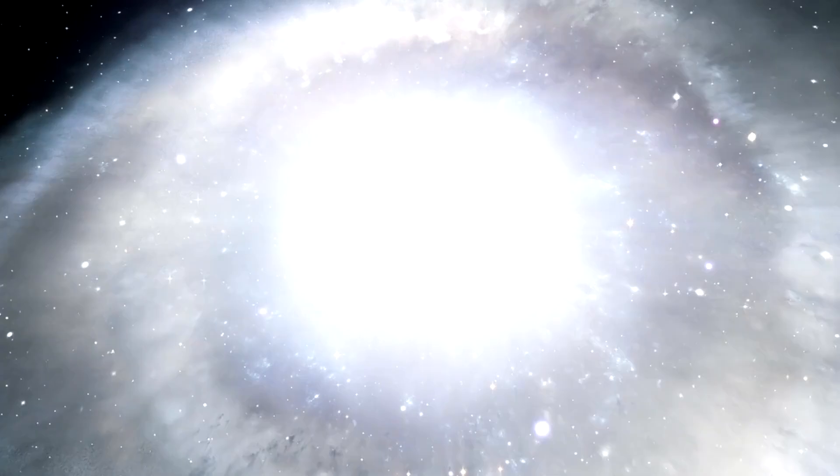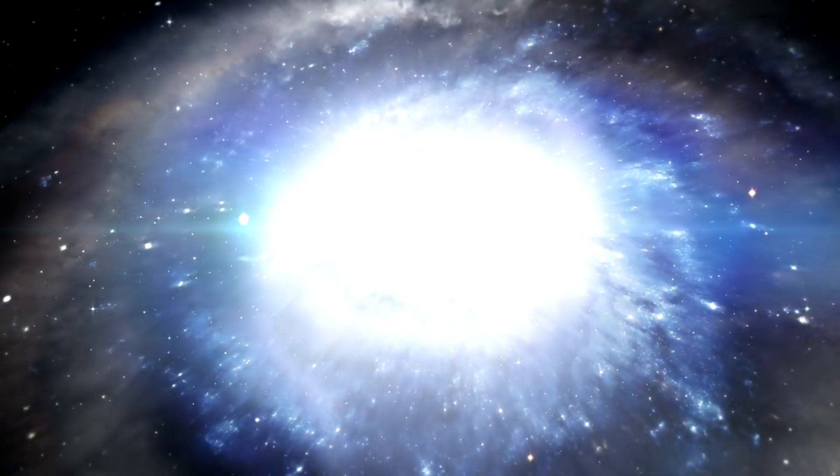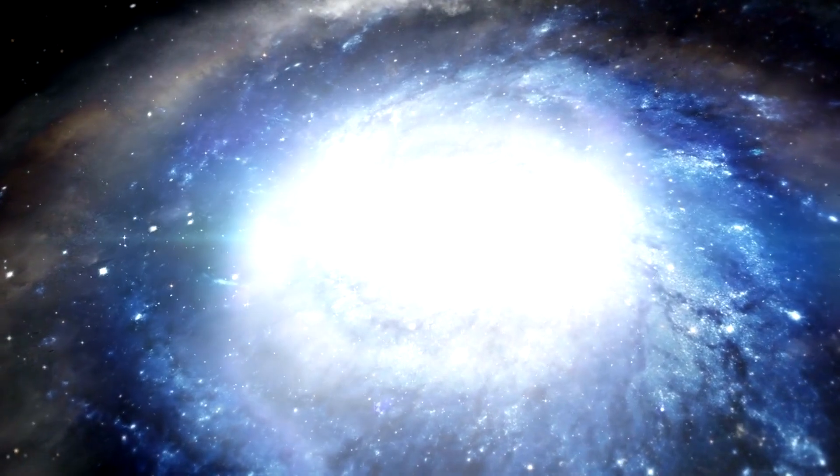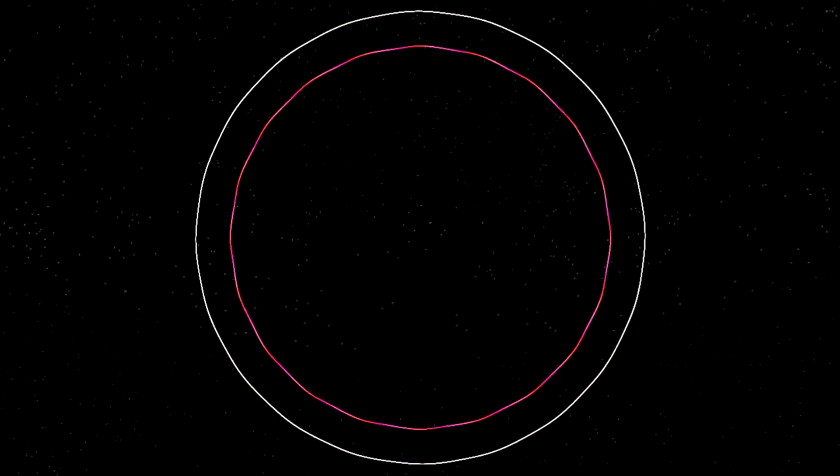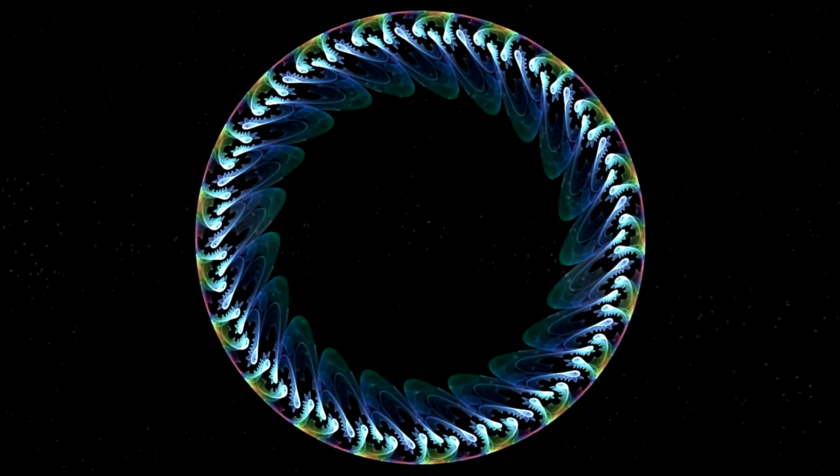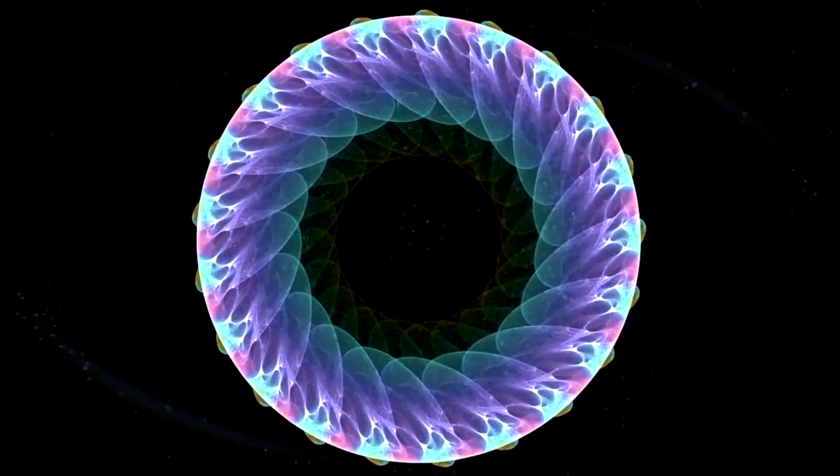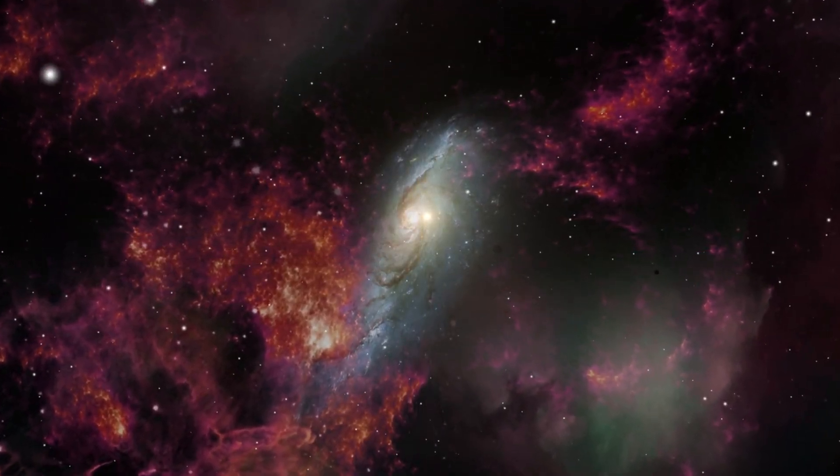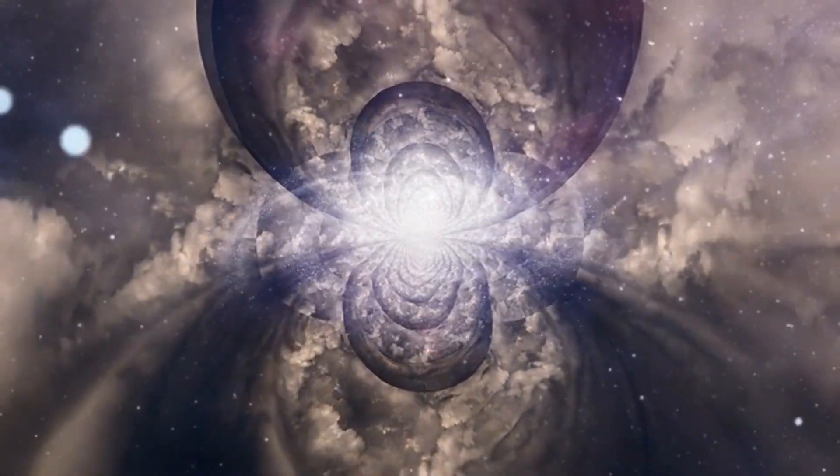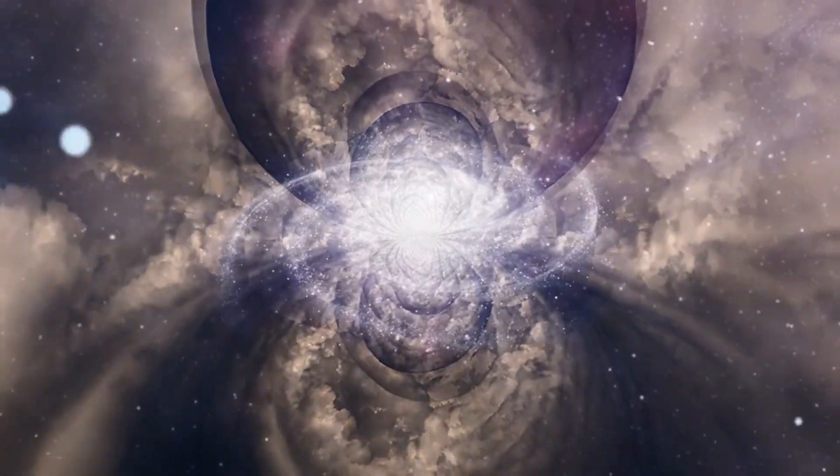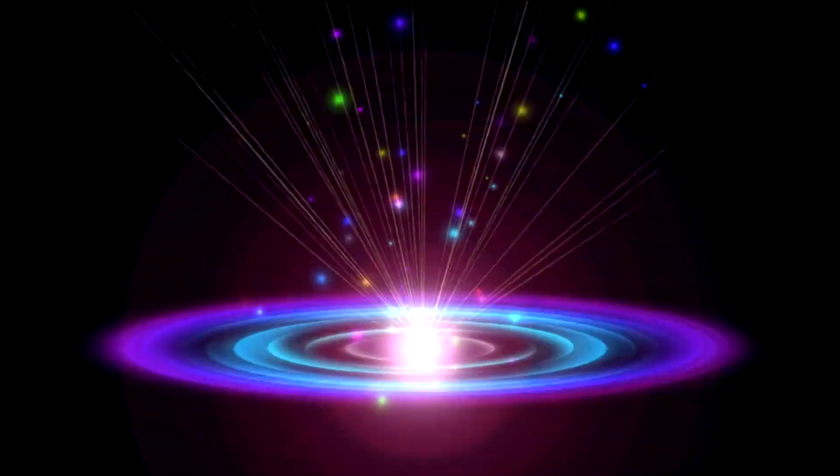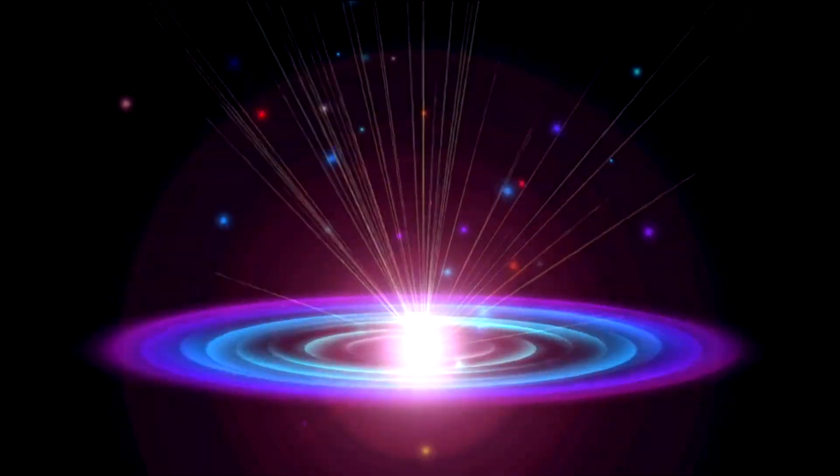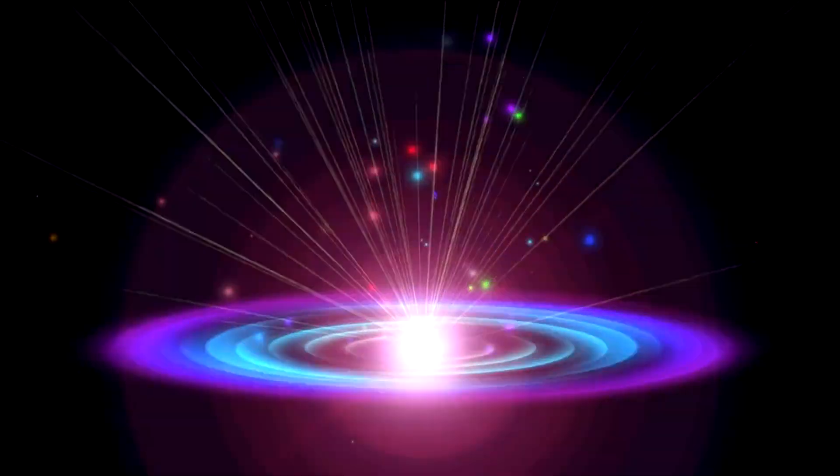Alternatively, it might suggest that this galaxy is in a unique stage of its development that we have not previously observed. The discovery of such a galaxy also prompts a re-evaluation of our understanding of the early universe. Galaxies like J613 plus 52 might have been more common than previously thought, but their lack of visible stars could have led to their being overlooked in earlier observations. This finding could indicate that our previous models of cosmic evolution, based largely on star-rich galaxies, might be incomplete. It challenges astronomers to consider that the early universe could have been more varied and complex than we currently understand.